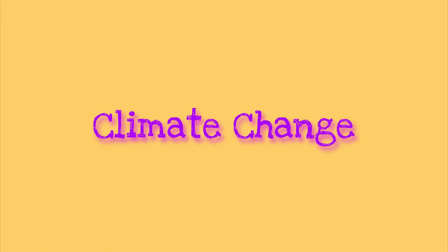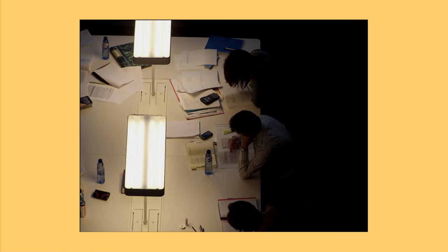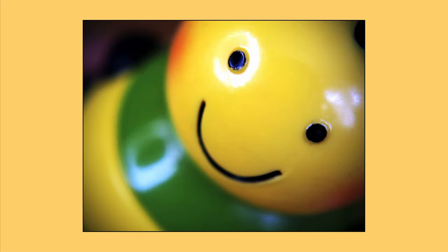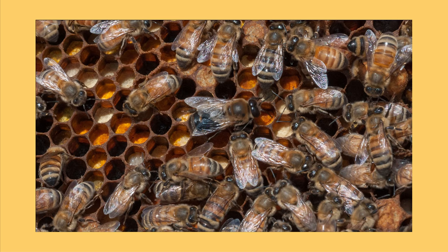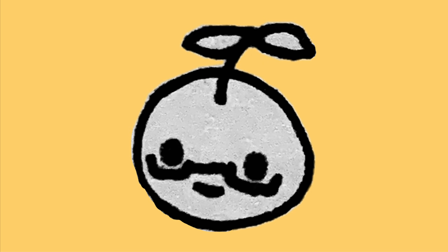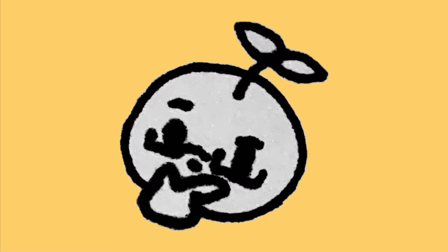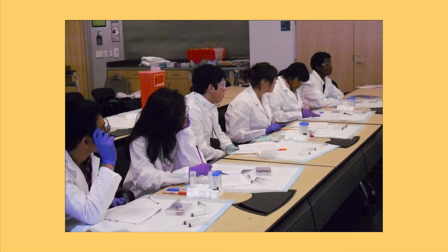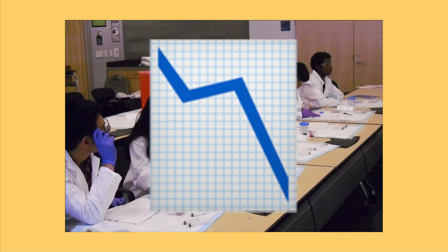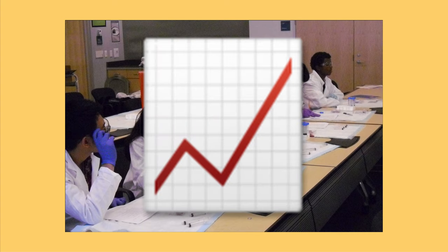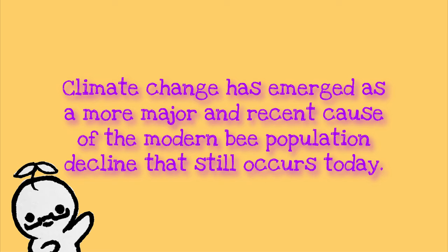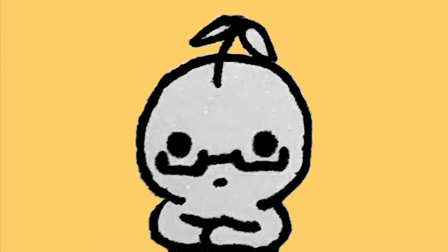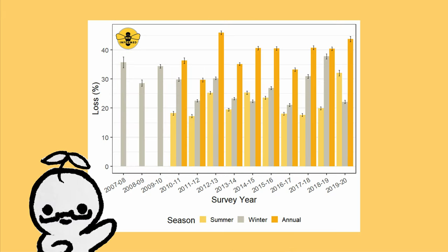Number two: climate change. Second to the leading cause, studies have shown that climate change has numbered bees down drastically. After recording bumblebee populations throughout North America and Europe, scientists conducted an experiment to analyze fluctuations in population over time. With the collected information, they were able to compare the relativity between bumblebees and temperature tolerance. Interestingly, the scientists say that areas most affected by global warming showed the most acute declines in bumblebee density, while populations arose in regions that had been previously too cool for the bees to thrive. In addition, climate change has emerged as a more major and recent cause of the modern bee population decline that still occurs today. Bees are known to be cool climate specialists; therefore, this has been a stronger factor in the more recent reports of the ongoing bee decline than other causes.